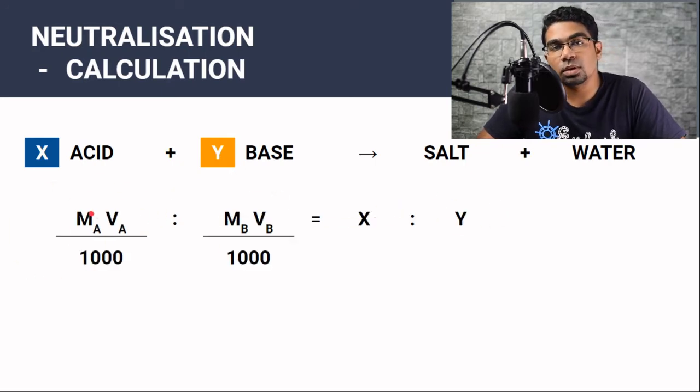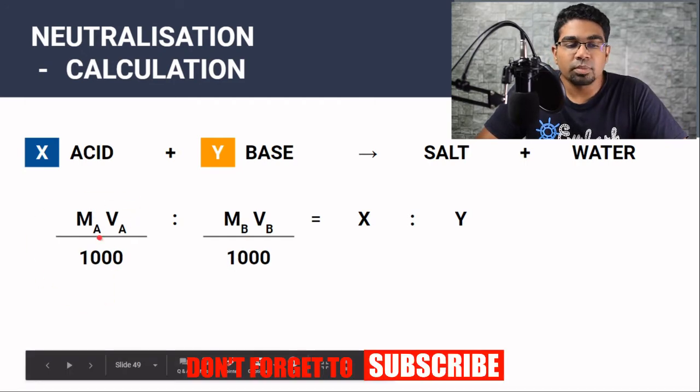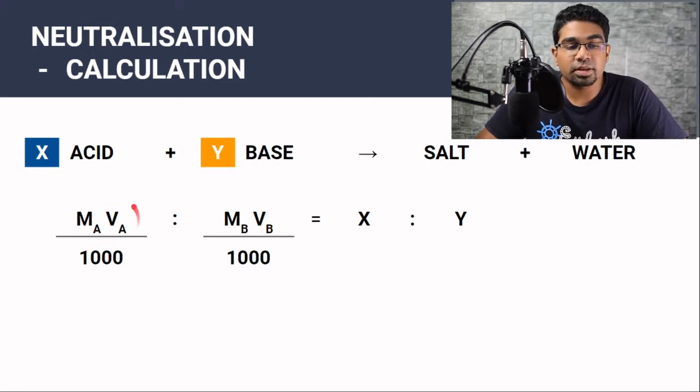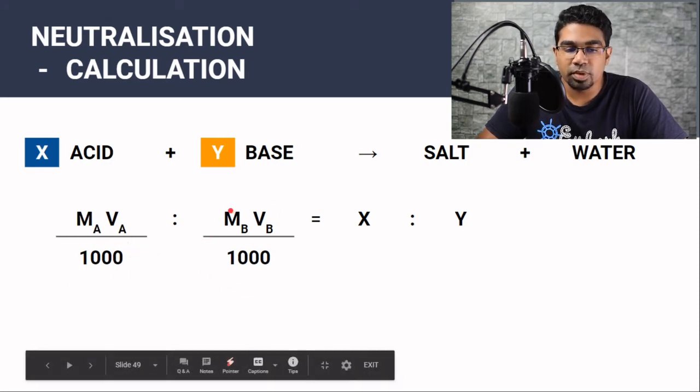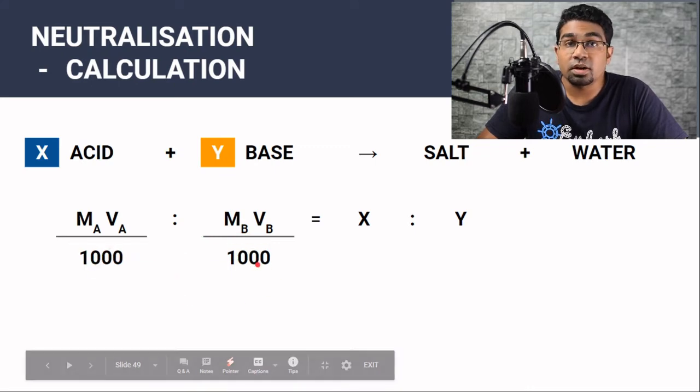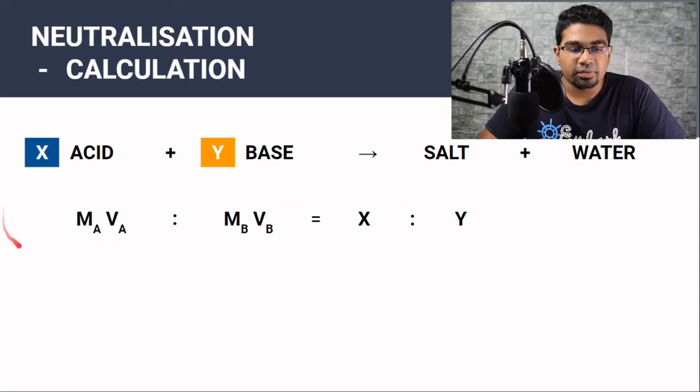I have covered this formula for moles in another video for standard solution preparation. Video links at the corner. But moles can be calculated through MV per thousand. So the moles of acid will be molarity of acid times volume of acid divided by thousand. Same goes to the base. So it will be MBVB over thousand. And since both sides are over thousand, this is a ratio. So we can eliminate the thousand.